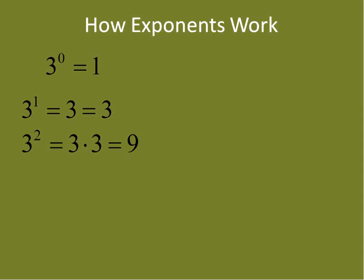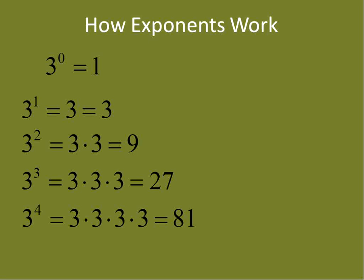3 to the power of 2 — you could also call that 3 squared — is 3 times itself 2 times, which equals 9. 3 to the power of 3 is 3 times itself 3 times: 3 times 3 times 3, which is 27. 3 to the power of 4 means our base of 3 gets multiplied times itself 4 times, which gives us 81.